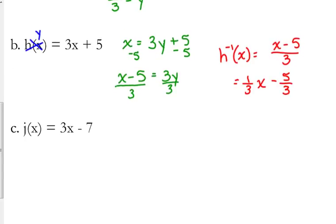Y'all try and do C. j(x) = 3x - 7. Find the inverse function there for me.